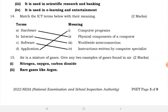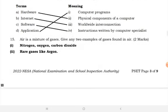Hardware means the physical components of a computer. Internet means worldwide interconnection. Software means instructions written by a computer specialist. Application means computer programs. Also: air is a mixture of gases — give two examples of gases found in air.